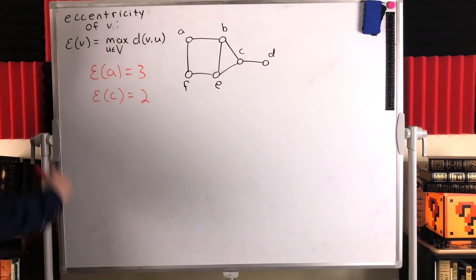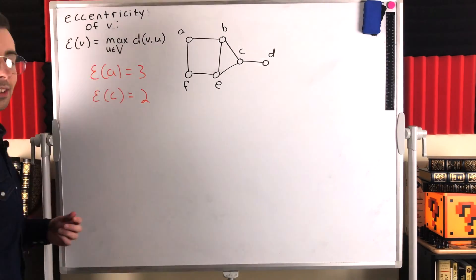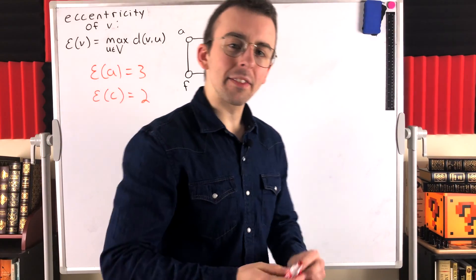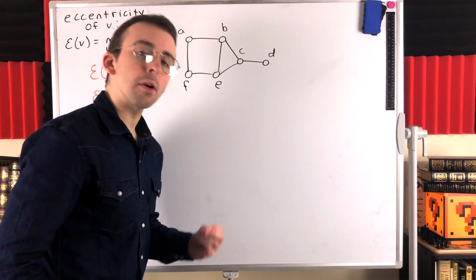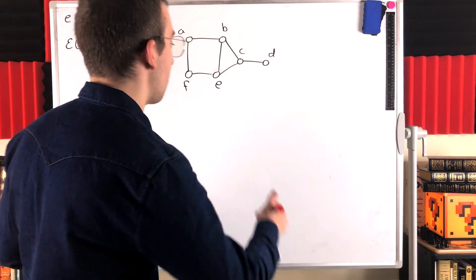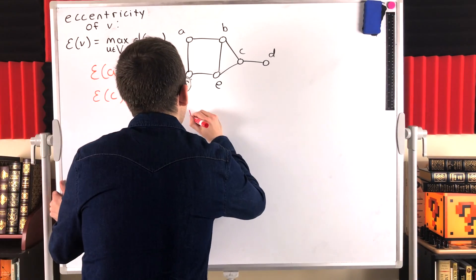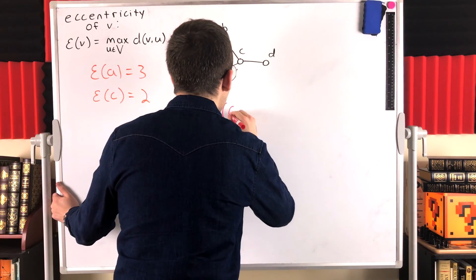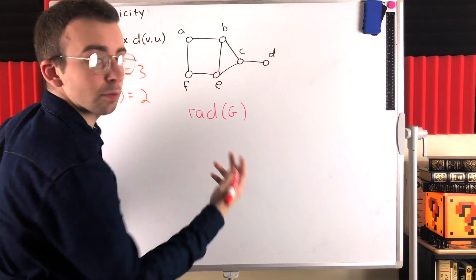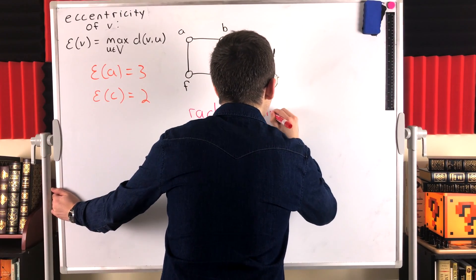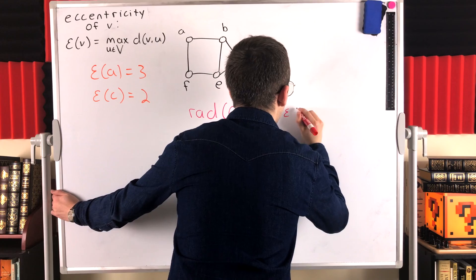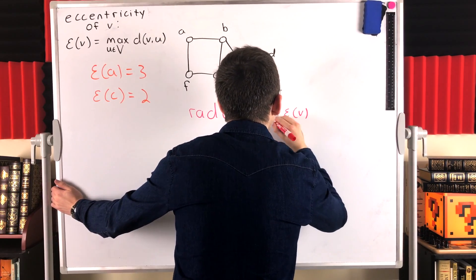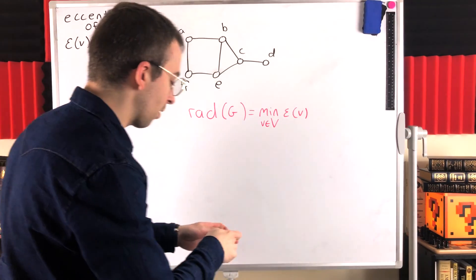The eccentricity of a vertex is the maximum distance between that vertex and any other vertex in the graph. We also have a couple of special names: the minimum eccentricity in a graph is called the radius of the graph, denoted rad of the graph name. That is the minimum eccentricity of v taken over all vertices v in the vertex set of the graph.